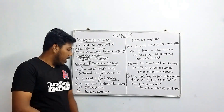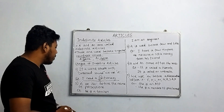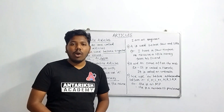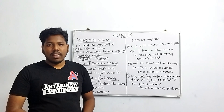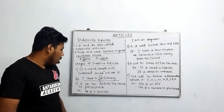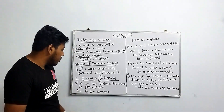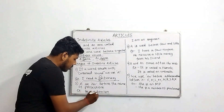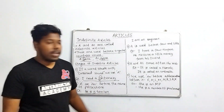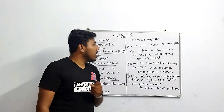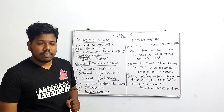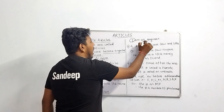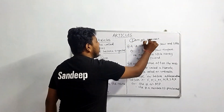The second use is 'a' or 'an' before the name of a profession. For example: 'He is a teacher' and 'I am an engineer.'